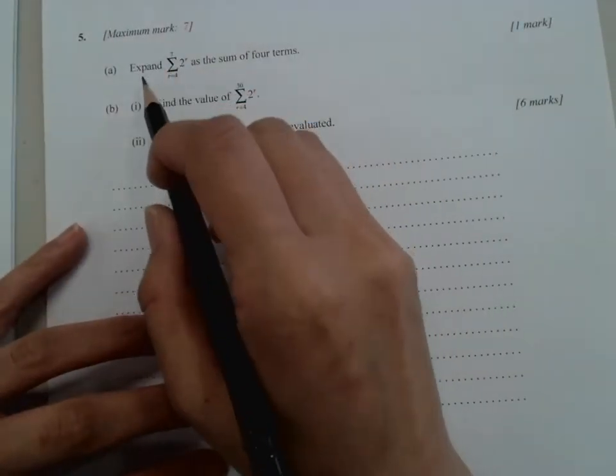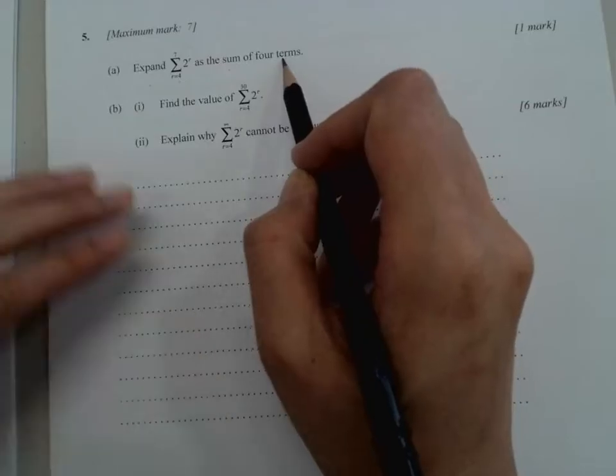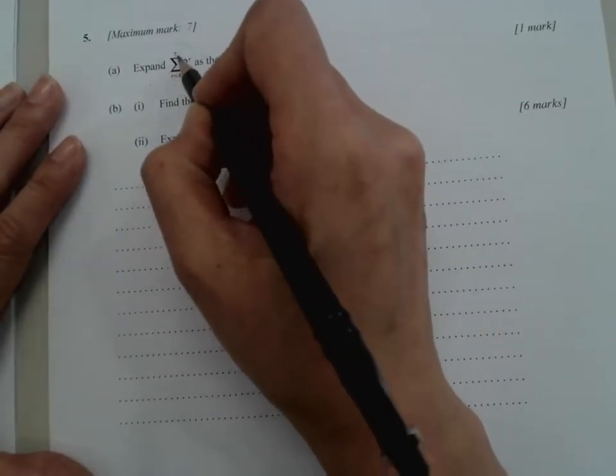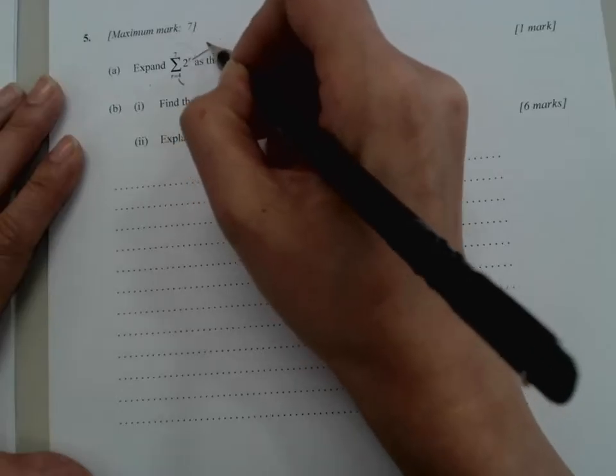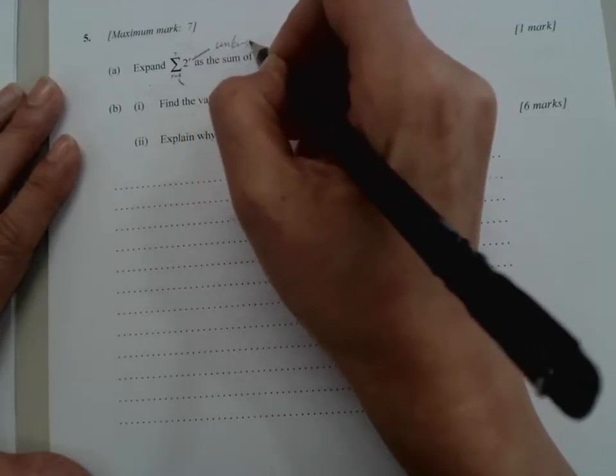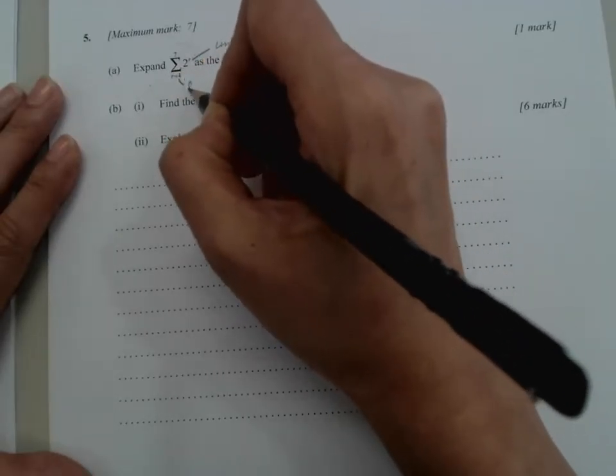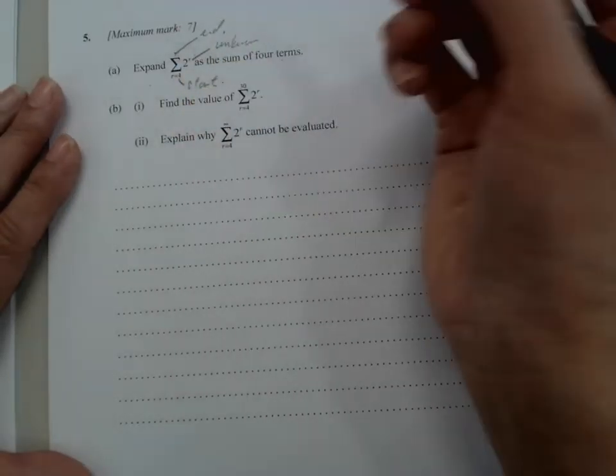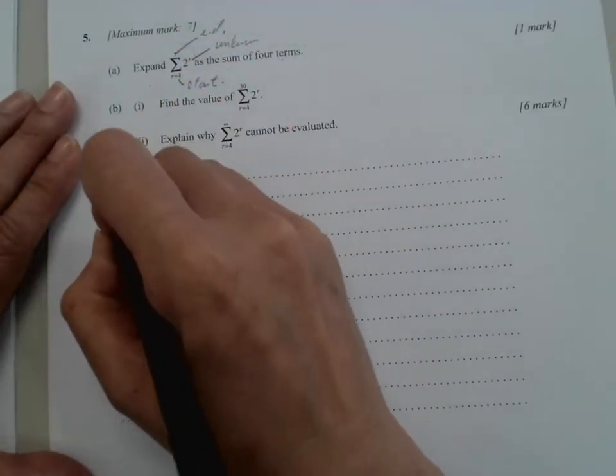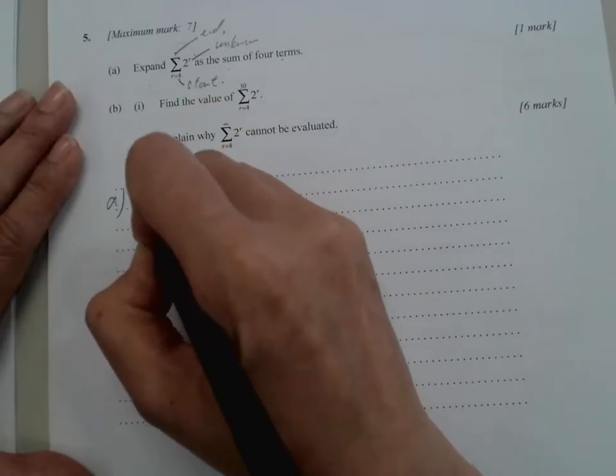All right, here's the next question. Expand this as the sum of four terms. This is summation, and this is the unknown here. The r will be the starting point, r equals 2, and this is the end point. So what we're going to do is expand this by writing it in a normal way.